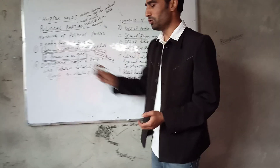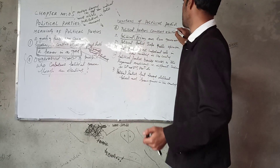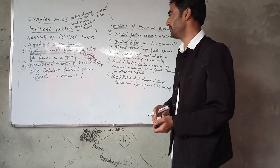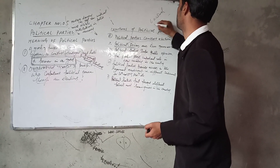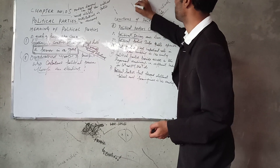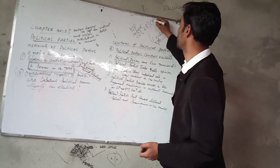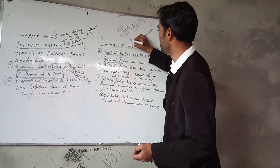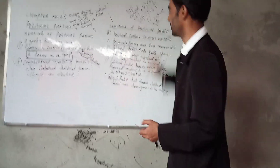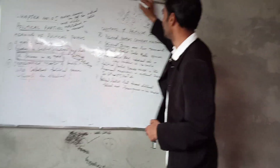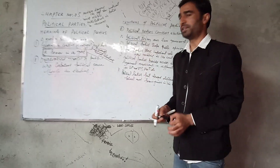This is the meaning of political parties. The second topic in Chapter Five of Class 10 is that political parties always contest elections. In India there are six national parties: BJP, Congress, CPI, CPI(M) — Communist Party of India (Marxist) — BSP (Bahujan Samaj Party), and NCP — Nationalist Congress Party. These are recognized by the Election Commission of India.